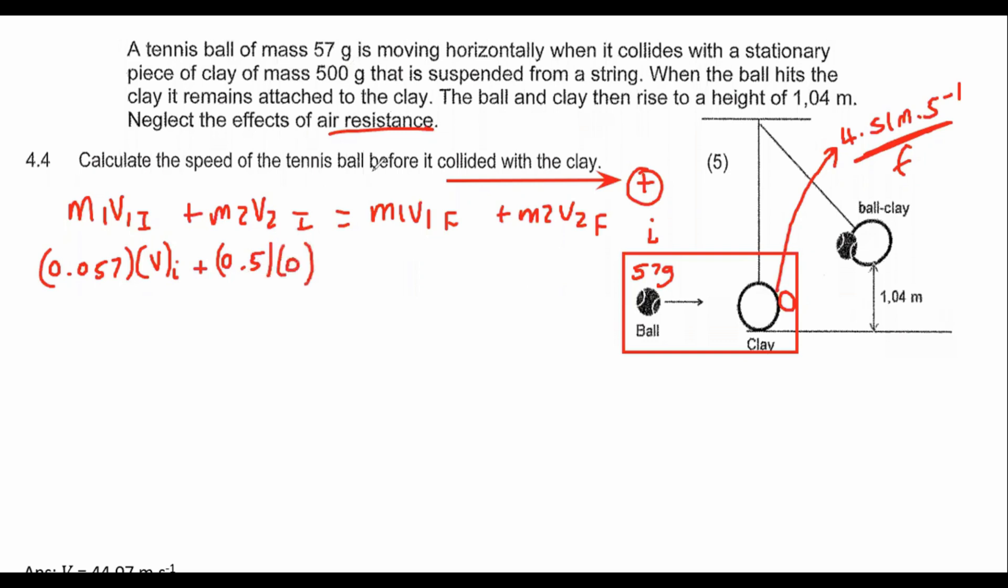The original mass of the clay is 0.5 kilograms, and its original velocity is zero because they told us it is a stationary piece of clay. You can combine both of these together because the ball and the clay stick together. So you could say 0.557, and we know their final velocity at this point when they collide. That is the velocity we calculated in the previous question: 4.51.